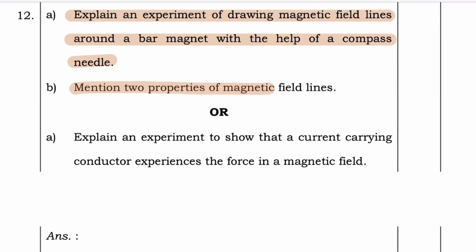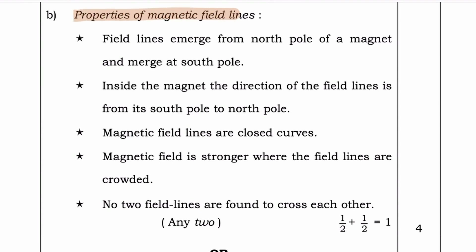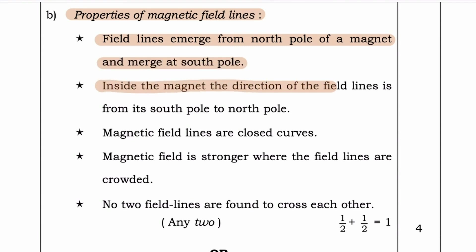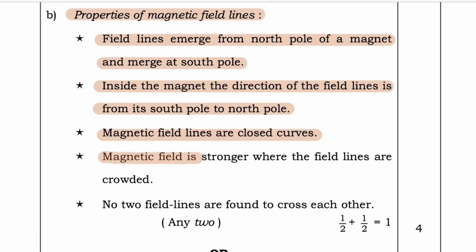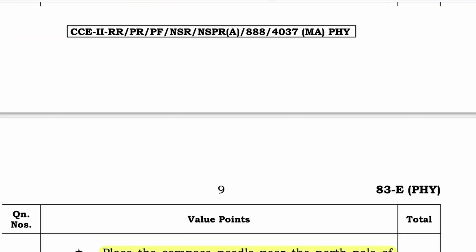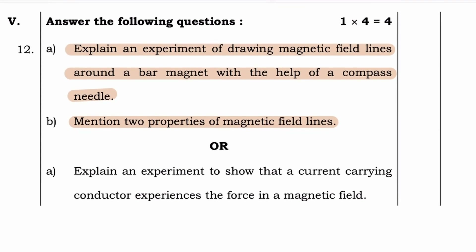Question B: Mention two properties of magnetic field lines. Properties of magnetic field lines: field lines emerge from the north pole of a magnet and merge at the south pole. Inside the magnet, the direction of the field lines is from its south pole to the north pole. Magnetic field lines are closed curves. Magnetic field lines are stronger where the field lines are crowded. No field lines are found to cross each other. You can write any two of them — for safety, write three.